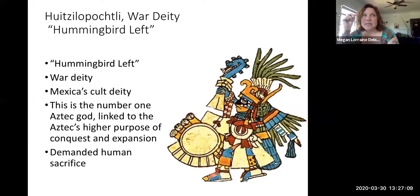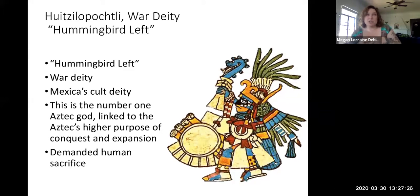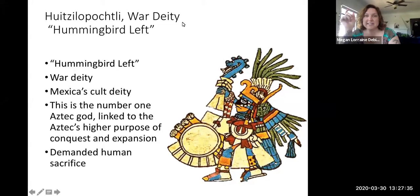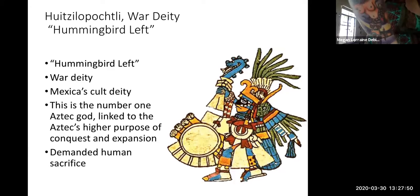Huitzilopochtli is linked to the number one purpose of the Aztec Empire, which is to build an empire through war — go out and conquer. This is what Huitzilopochtli tells the Mexica people they need to do: go out and conquer in his name. The number one god of the Aztec Empire is a war deity. This is Coyolxauhqui — lady bells her cheeks — and you'll notice in the tattoo that she's all chopped up, her arms and legs dismembered, and I'm going to tell you why.